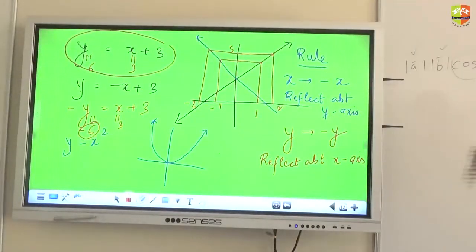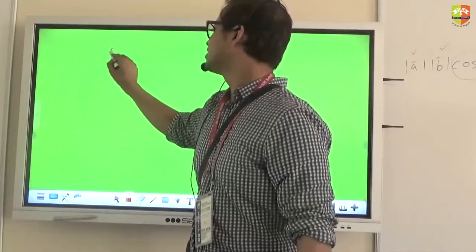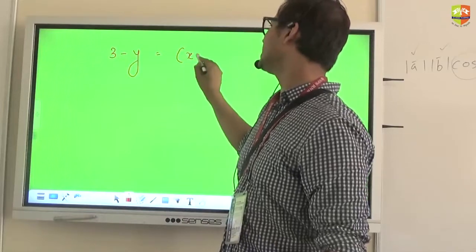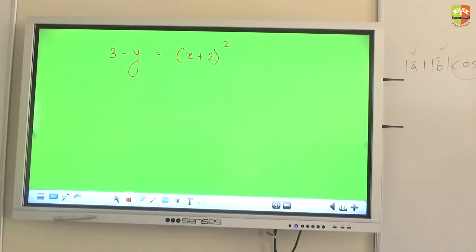Just one quick problem I will give you and then you will have a break. 3 minus Y is equal to X plus 2 the whole square. Think properly. Think carefully. Take your time and then plot this graph. Mark its vertex and where it cuts the Y axis.